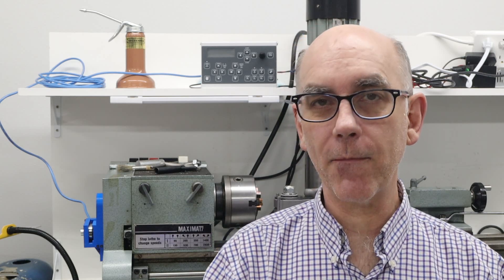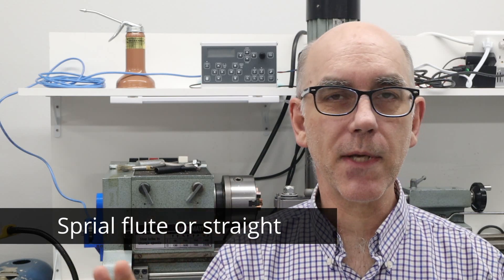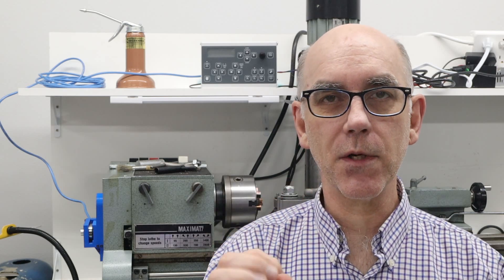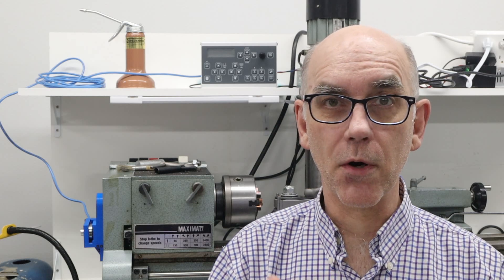Now, one of the other advantages of a spiral point tap, from what I've been told, is that it's stronger than a spiral flute tap. The other thing that you may have noticed is that the threads on this tap were a lot shorter, and the narrow section was a lot shorter as well. So all of that makes it stronger overall.